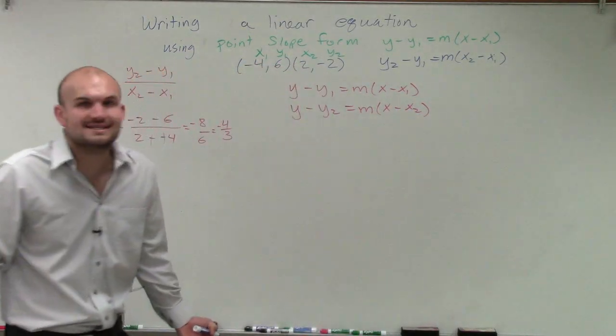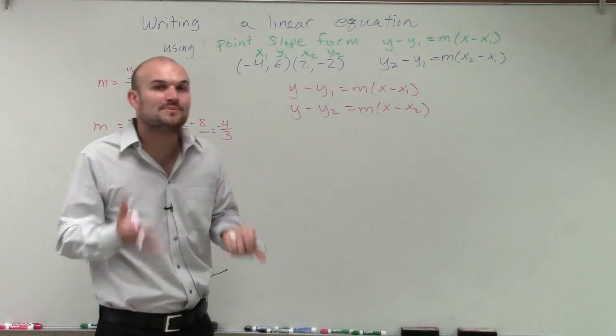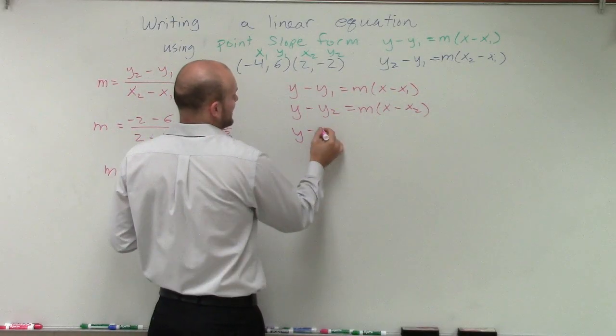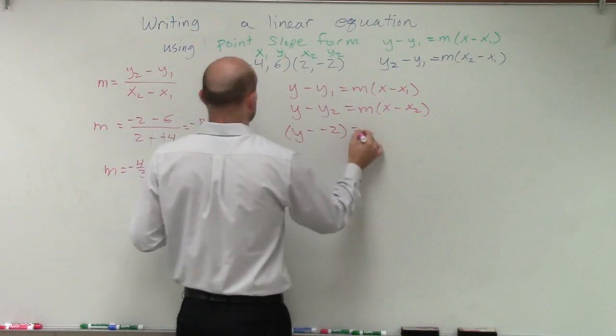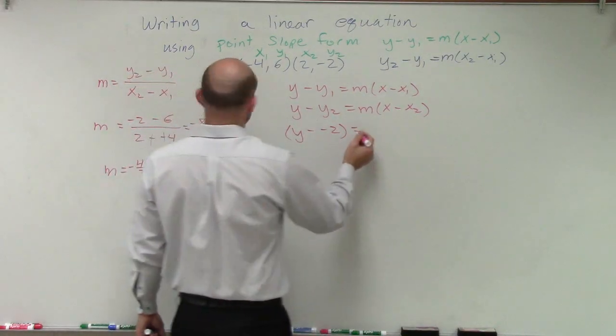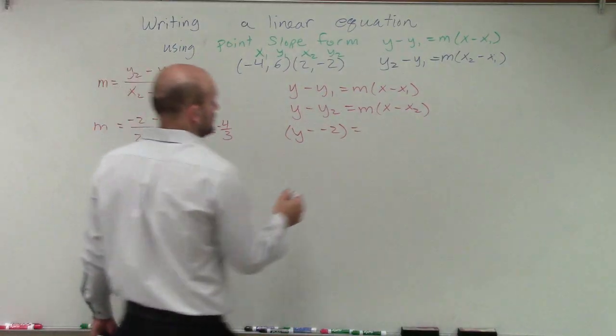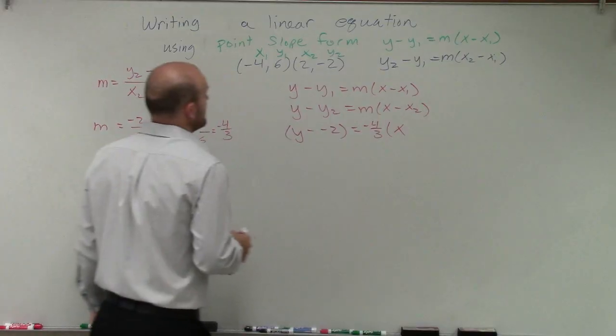It doesn't matter which y's and x's I use. You can just rewrite it. It's going to be the same thing for either point. So therefore, I have y minus negative 2 equals now negative 4 thirds times x minus 2.